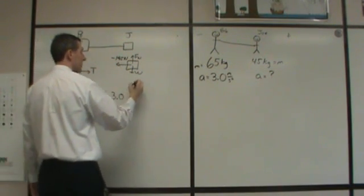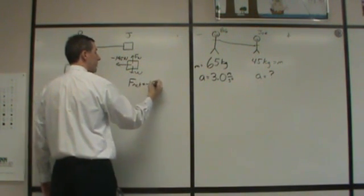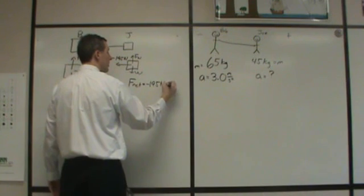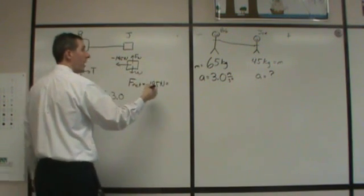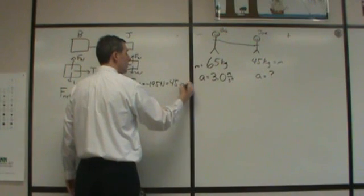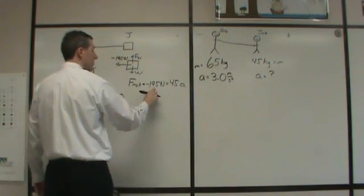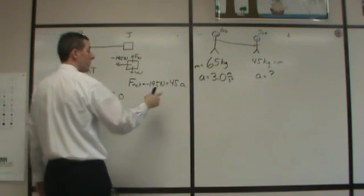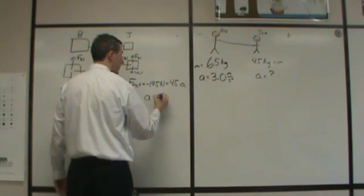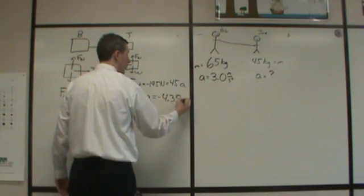What we can do now is we can say that this net force acting on Joe is negative 195 N. That will be equal to Joe's mass times his acceleration, mass being 45. For our acceleration, we take negative 195 and divide it by 45, and our answer comes to negative 4.3 meters per second squared.